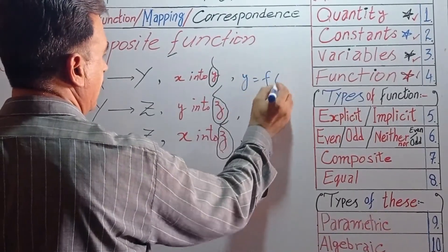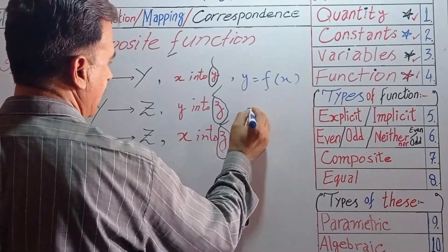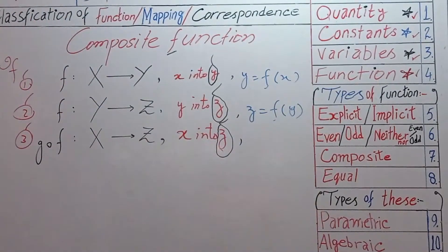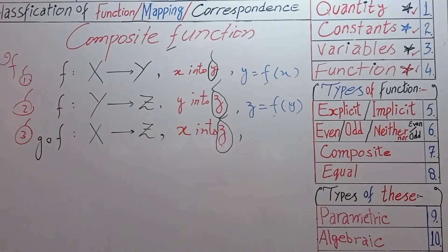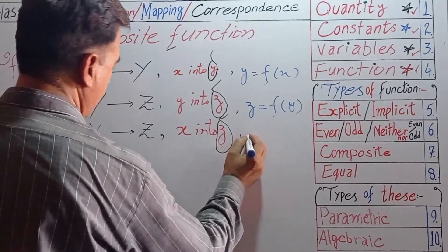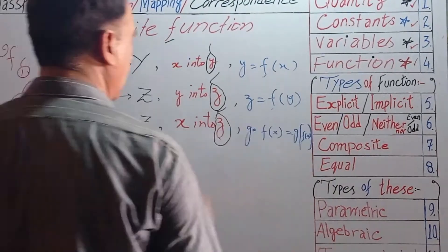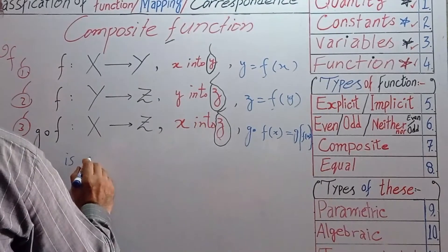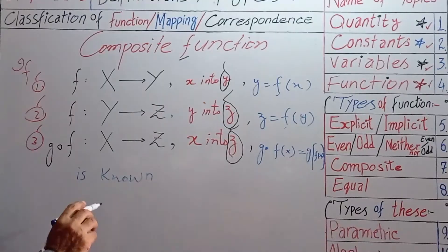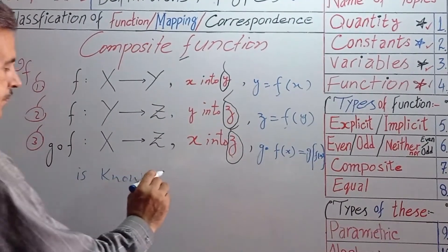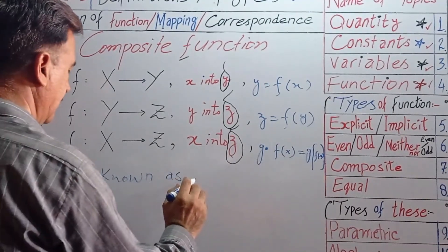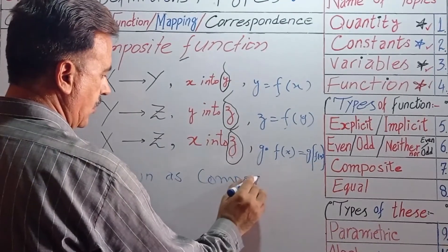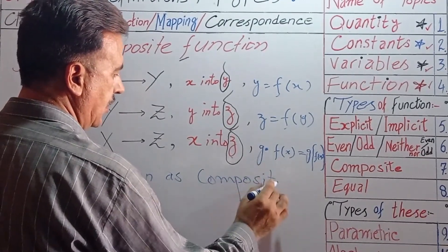Here, y is equal to f of x, z is equal to f of y, and g of f — written as gof — is known as a composite function.